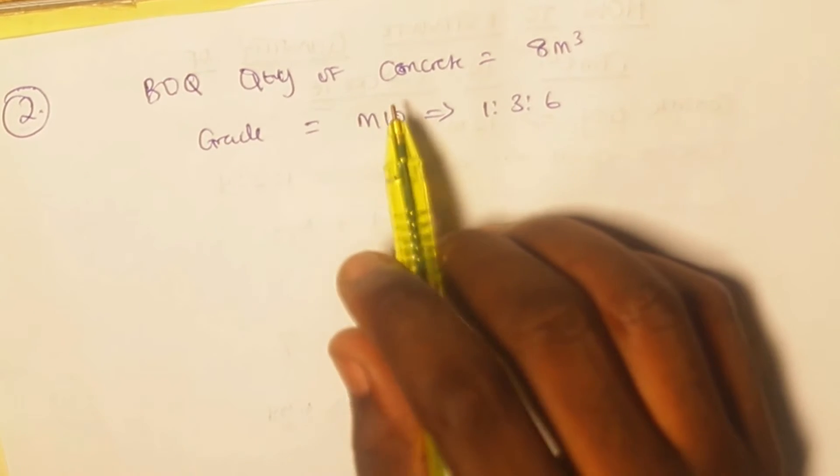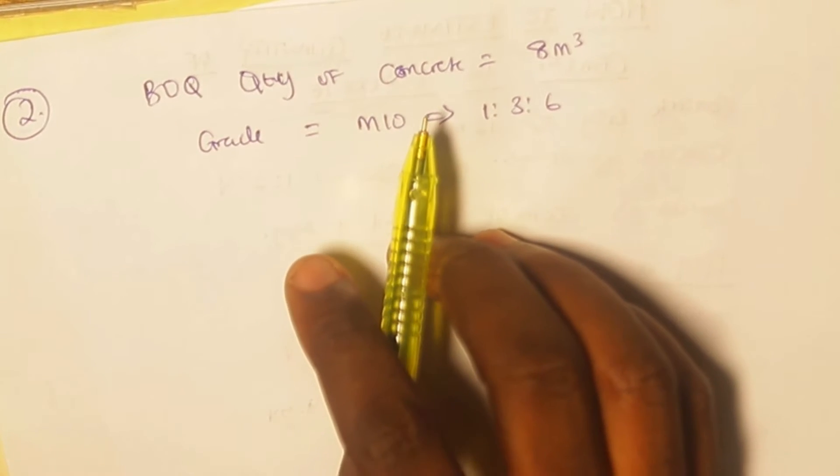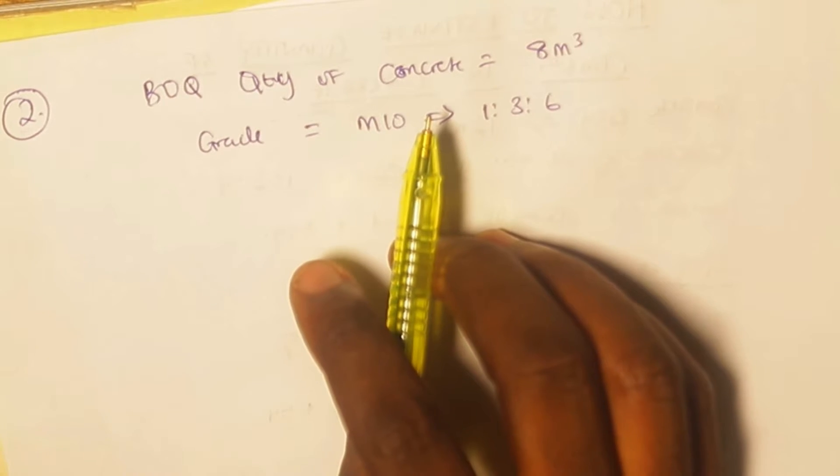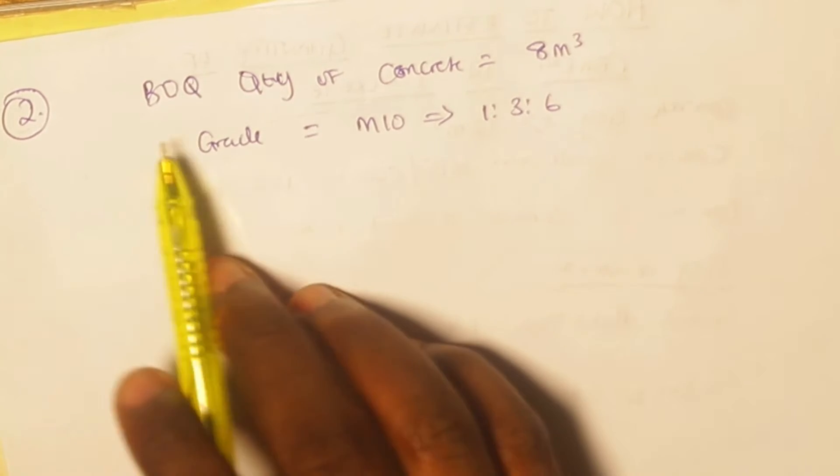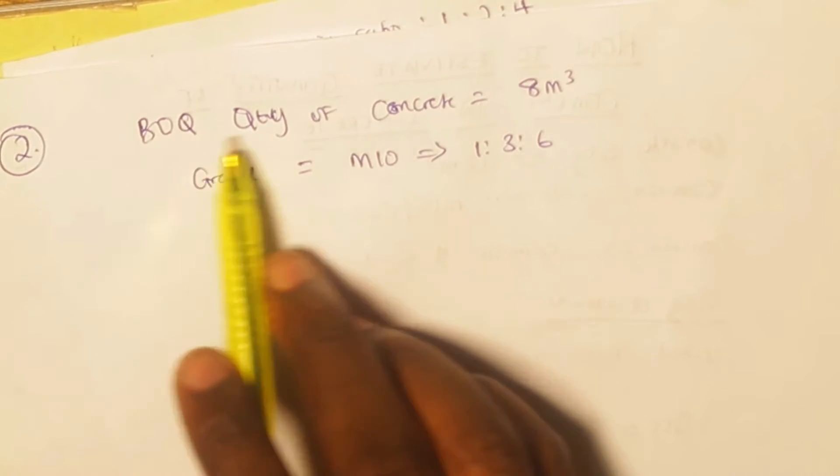In this second example, I'm going to show you how simple this particular calculation can be. I only took my time to explain in the first example because for some persons this might likely be the first time they'll be coming across this calculation.